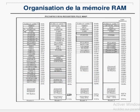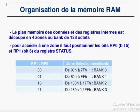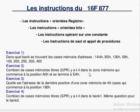Il y a de nombreux registres spécifiques. Les registres de la première page ne se trouvent pas forcément dans les autres pages. Certains registres se trouvent dans toutes les pages, car on doit toujours y avoir accès. L'accès aux pages se fait via les bits RP0 et RP1 du registre STATUS. Ces deux bits donnent quatre combinaisons, chacune permettant d'accéder à une page différente, avec ses adresses initiale et finale.